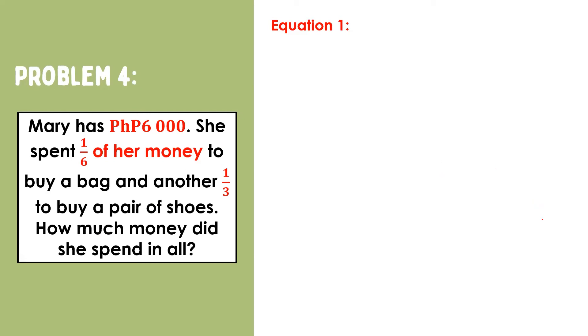She spent one-sixth of her money to buy a bag and another one-third to buy a pair of shoes. How much money did she spend in all? In this problem, we are asked to find the total amount of money Mary spent in all. And to help us answer this, we are given that Mary used one-sixth of her money to buy a bag and one-third to buy a pair of shoes. We are also given that she has six thousand pesos.